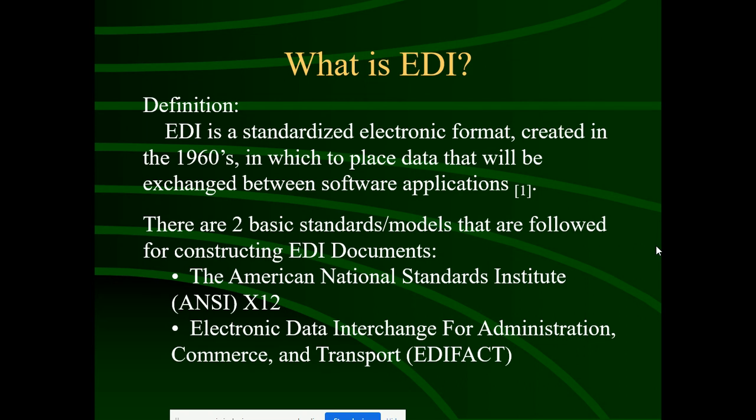There are two basic standard models followed for constructing EDI documents. The first is the American National Standards Institute standard, called ASC X12. The second is Electronic Data Interchange for Administration, Commerce and Transport, called EDIFACT. These are the two formats most industries are working on.